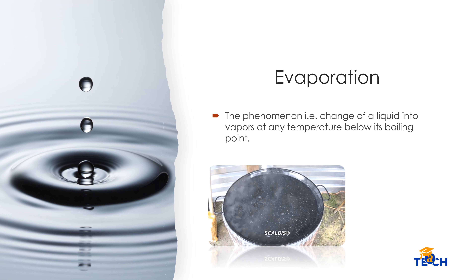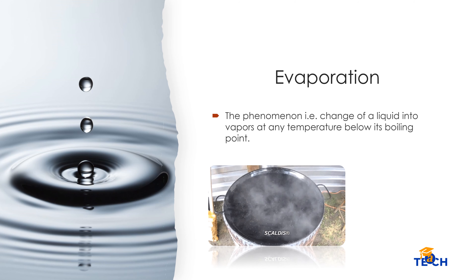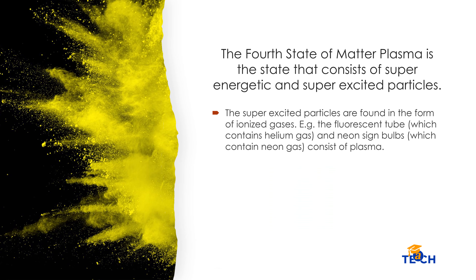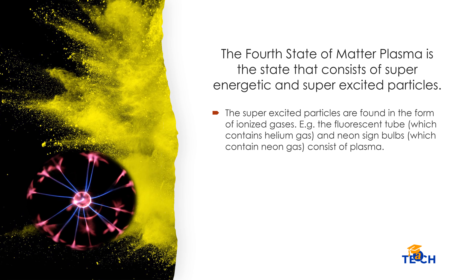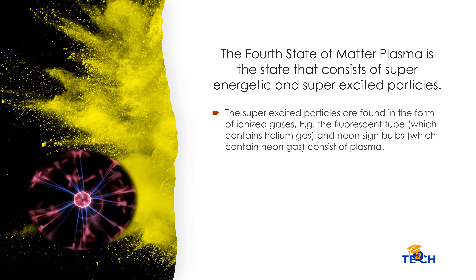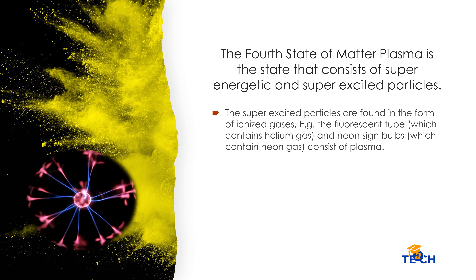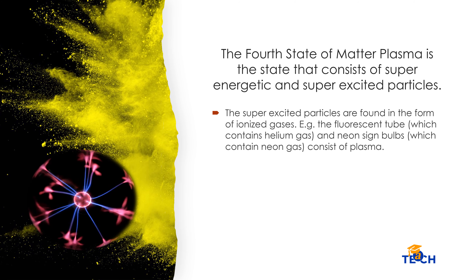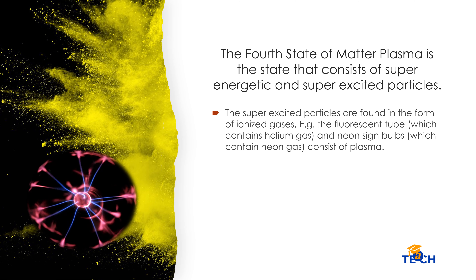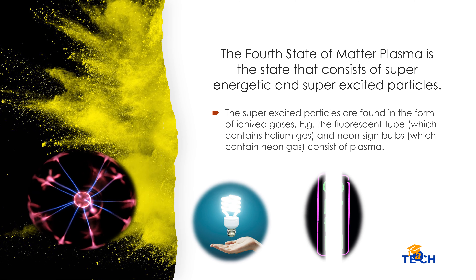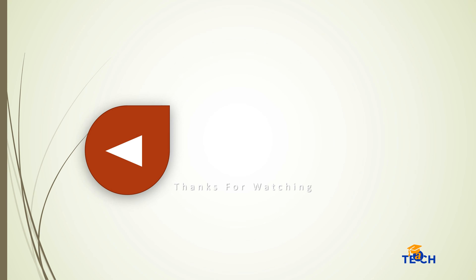Evaporation is the phenomenon of change of a liquid into vapors at any temperature below its boiling point. The fourth state of matter, plasma, is a state that consists of super energetic and excited particles. These particles are found in the form of ionized gases. For example, fluorescent tubes containing helium gas, and neon sign bulbs which contain neon gas.